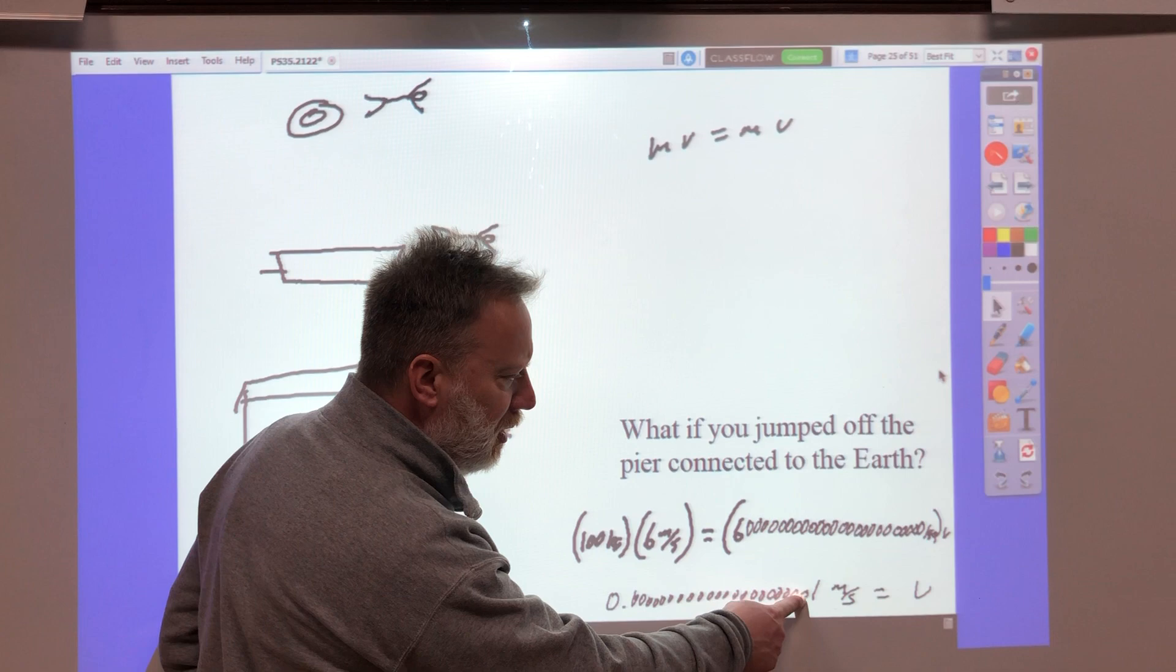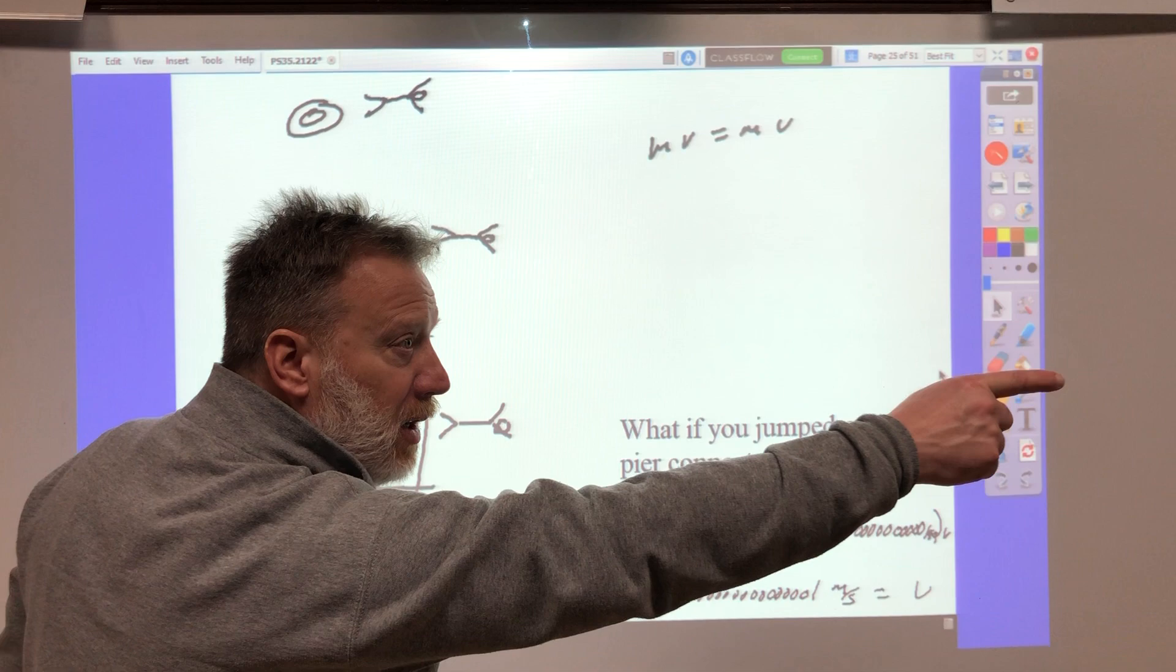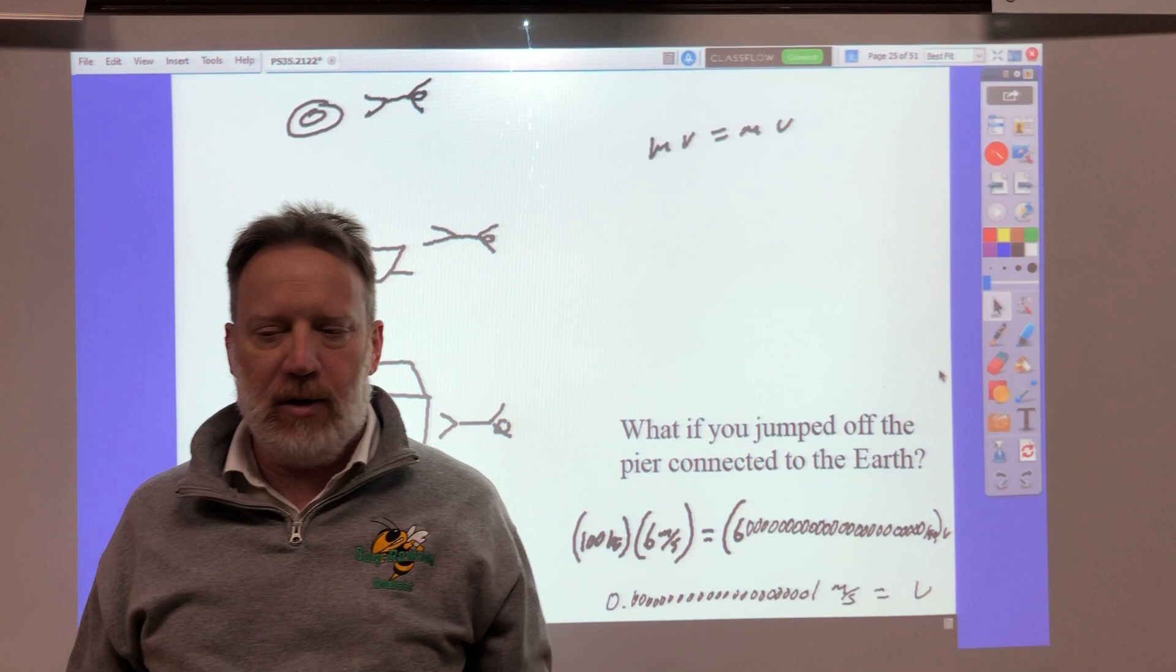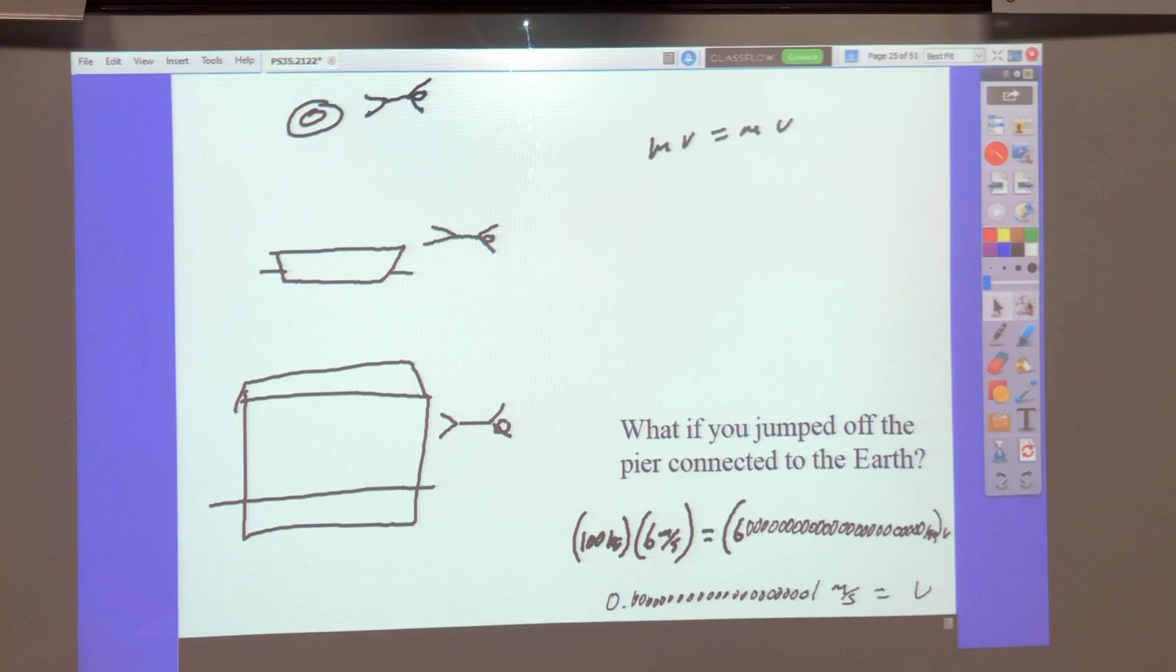It is 0.000000, a whole bunch of zeros, 0.00001 meters per second. So the bigger the boat you're jumping off of, the slower it moves. Even if it was the Earth, it would move exceedingly slowly, and there's all kinds of other motions on the Earth at the same time, and it would cancel out. You'd never notice it. It's immeasurable, but nevertheless real.